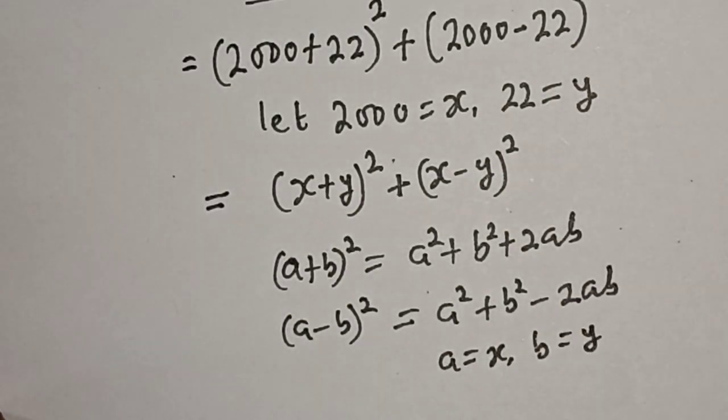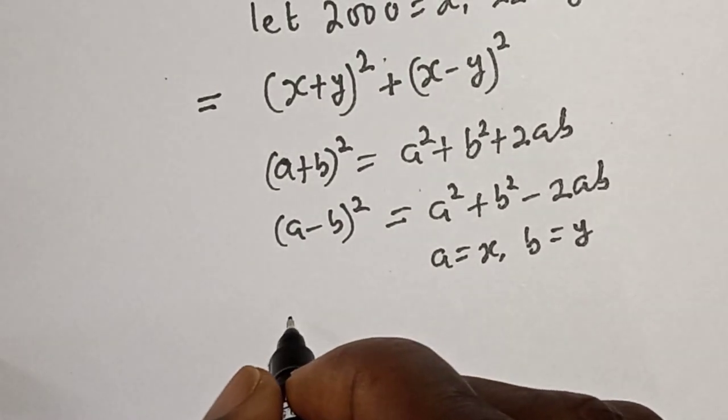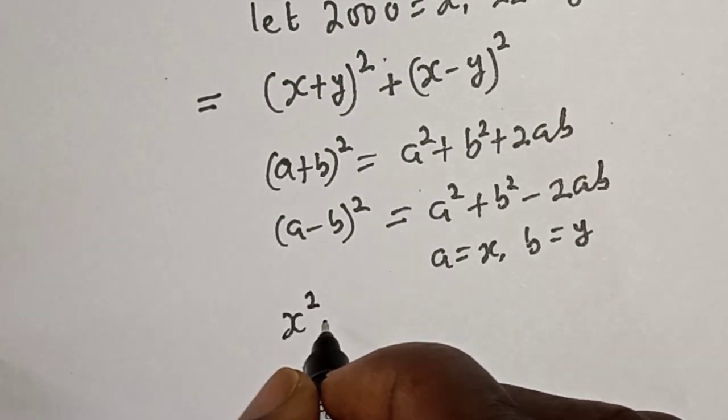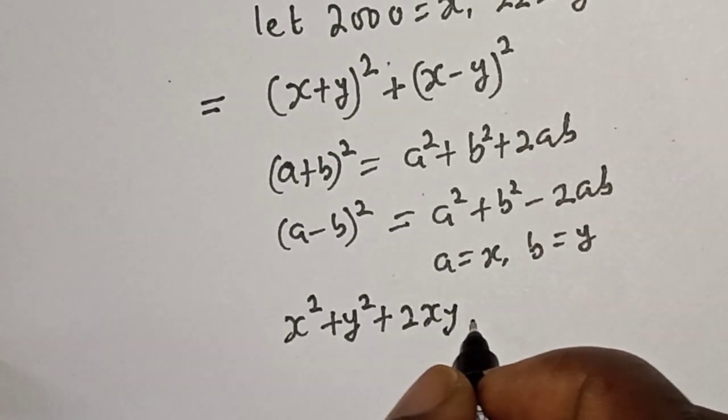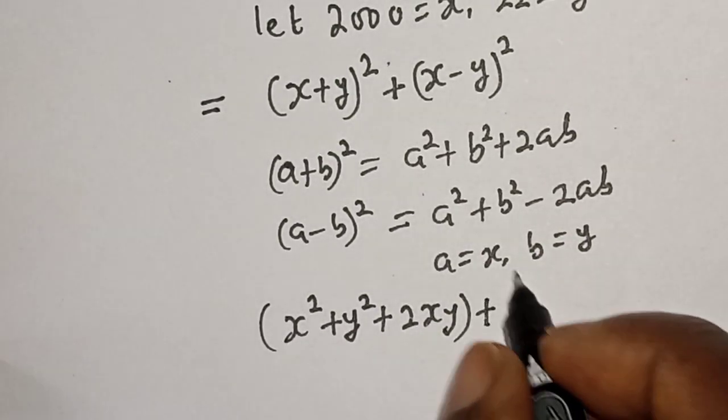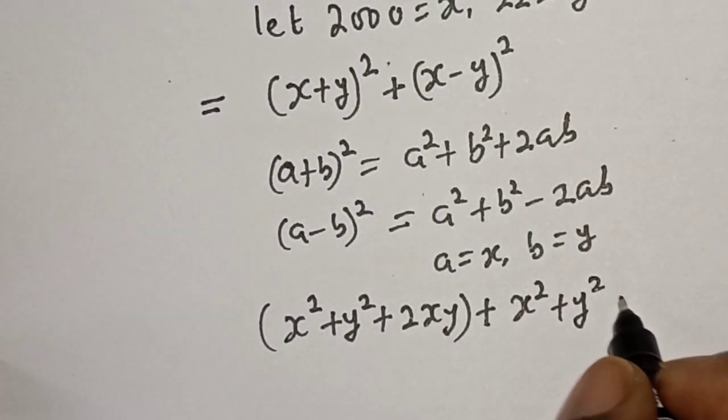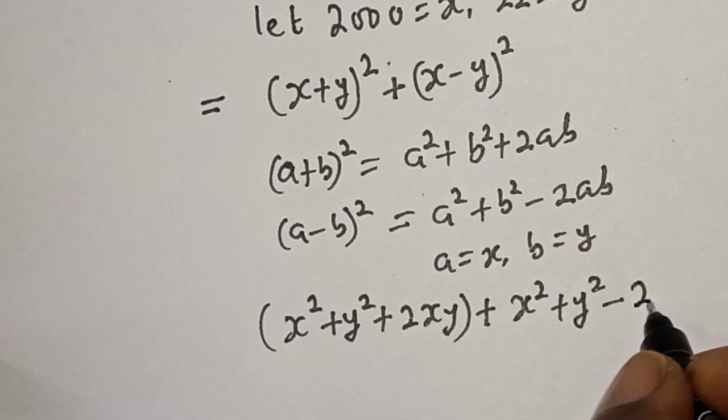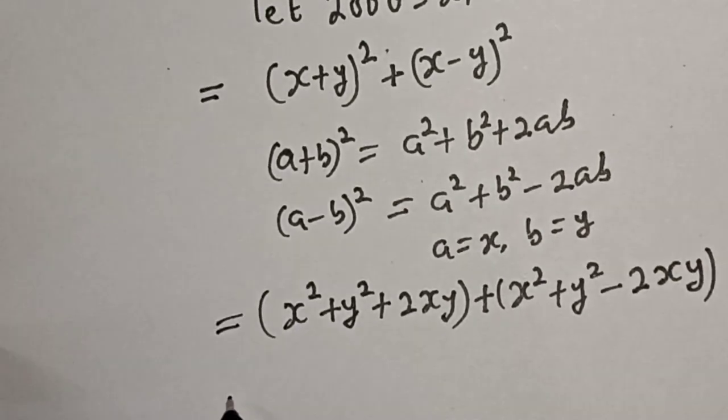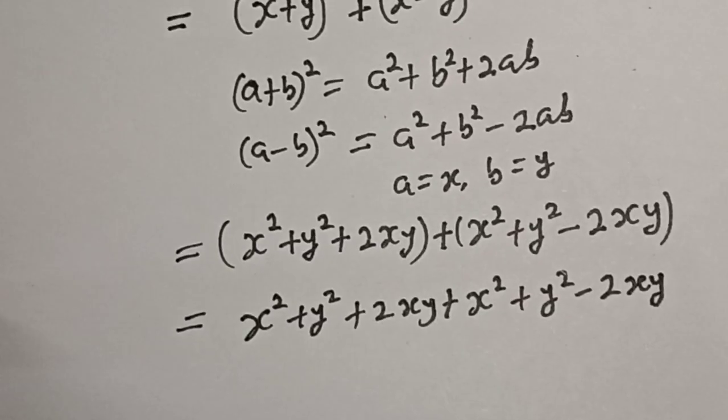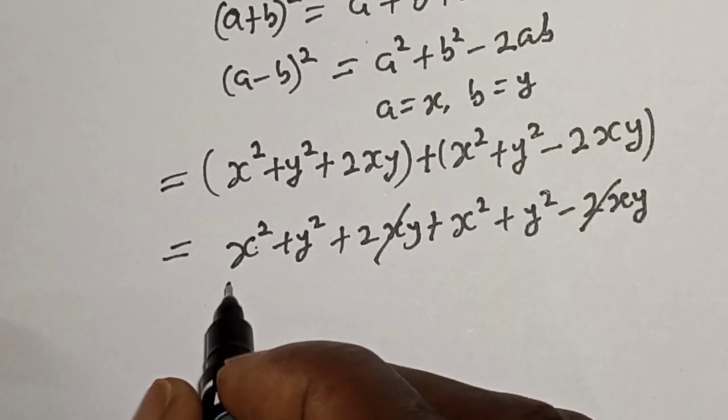So this is x square plus y square plus 2xy, plus this one is x square plus y square minus 2xy. Then this is equal to, now this one will cancel this, x square plus x square.